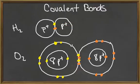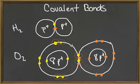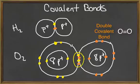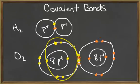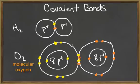Oxygen has eight electrons with six electrons in its outer energy level. It needs two more electrons to become stable. Oxygen can become stable by sharing two of its electrons with another oxygen atom. Each oxygen shares a pair of electrons, which is called a double covalent bond. The shared electrons will orbit around the nuclei of both oxygen atoms. This molecule is called molecular oxygen, or O2. Molecular oxygen is an atmospheric gas that is very important to most organisms. Our cells would die without a relatively constant supply of oxygen.